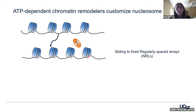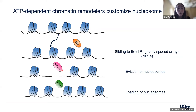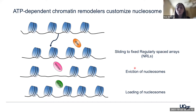For example, members of the imitation switch or iSwitch family remodelers through its ATPase SNF2H are known to slide nucleosomes and create regularly spaced arrays or fixed nucleosome repeat lengths, and it's often associated with heterochromatin formation. Other examples broadly include the SWI/SNF family, which may evict nucleosomes to create site accessibility, or the INO80 family, which has many roles including loading of nucleosomes onto DNA. All of these roles modulate nucleosome positioning in some way to ultimately dictate underlying DNA accessibility.